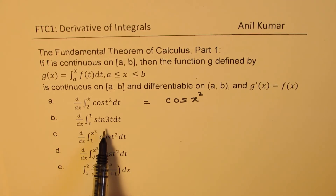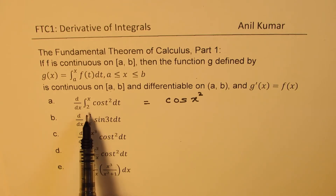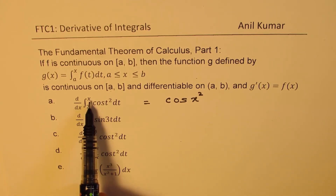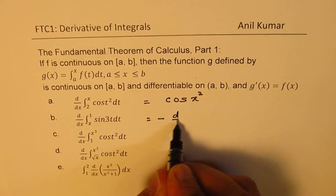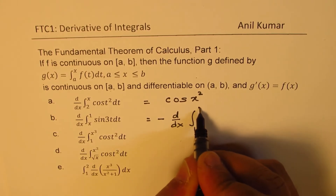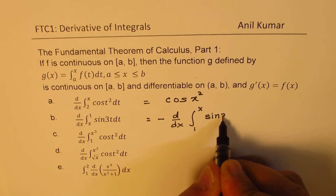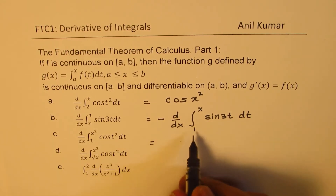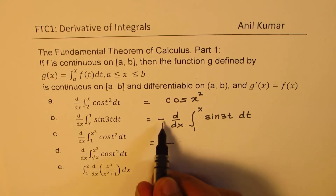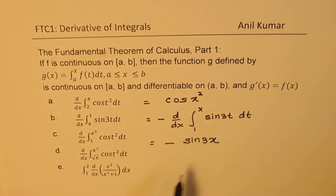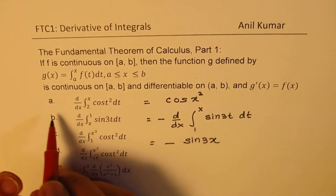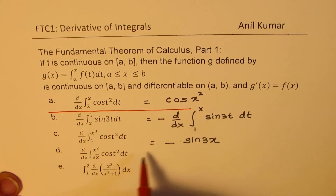In the second case, the limit is not from a constant to x, but written in reverse order — x to 1. We can rewrite this as negative of d dx of the integral from 1 to x of sin(3t) dt. Applying the theorem, the result is negative sin of 3x. So that is the answer for part b.